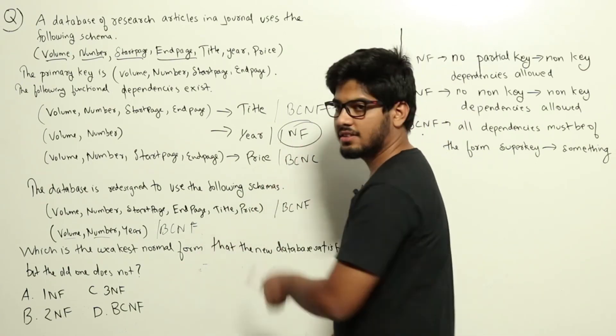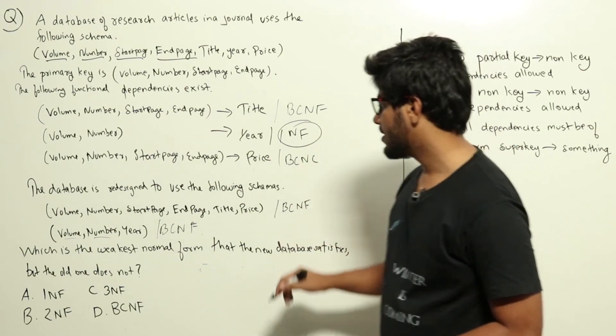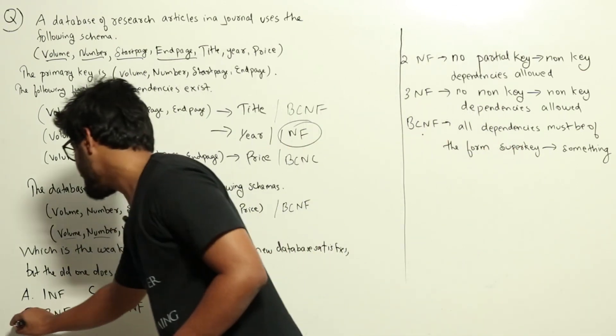So the weakest normal form that the new database satisfies but the old one does not is 2NF. The correct answer is option B: 2NF.